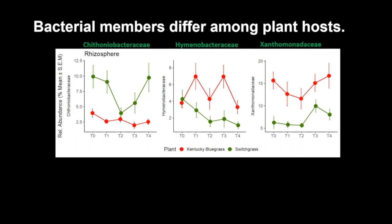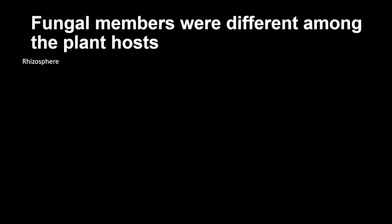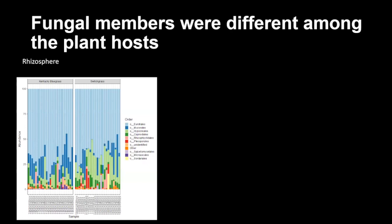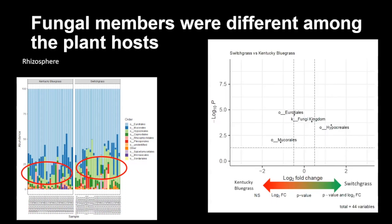As we saw in the bacterial community, we also saw similar patterns in the fungal community. The y-axis is the samples ordered by time, and the y-axis is relative abundance. I want you to look at the light green order — in the case of fungi, you can see how in Kentucky there's not a whole lot, but in switchgrass there is more. Again, we did a differential abundance analysis where we can see Hypocreales being favored towards switchgrass, confirming we have more of them there.